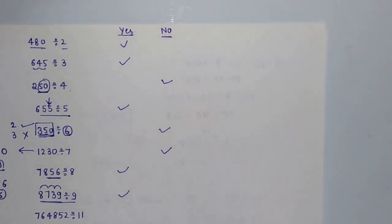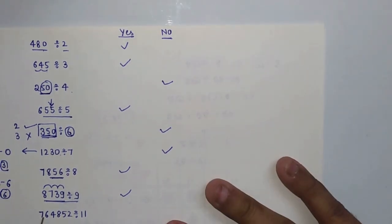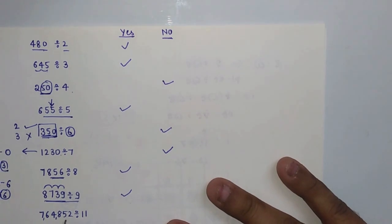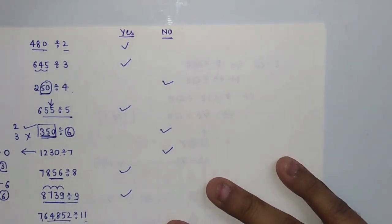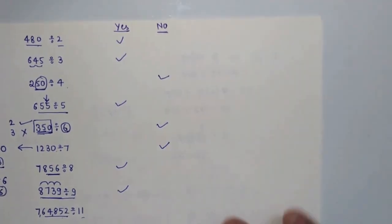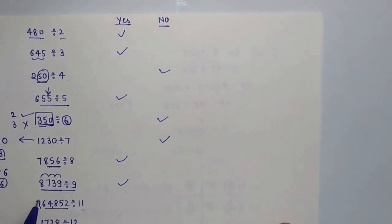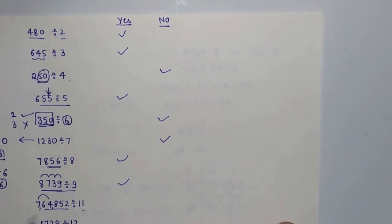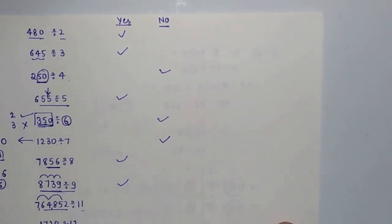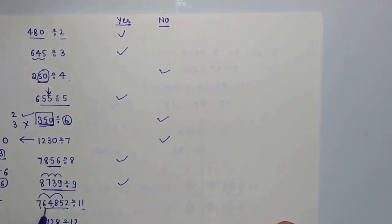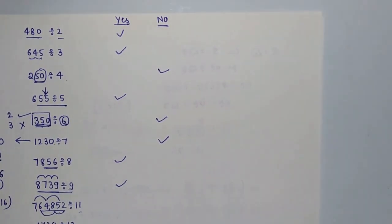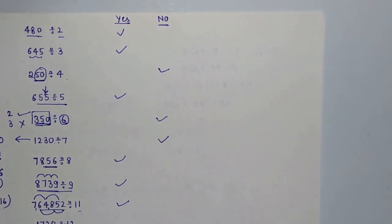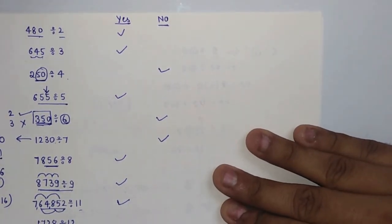Is 7,64,852 divisible by 11? We take the alternating sums: odd-place digits 7+4+5=16; even-place digits 6+8+2=16. The difference is 16−16=0. Since 0 divided by 11 is 0, we can say this number is divisible by 11.